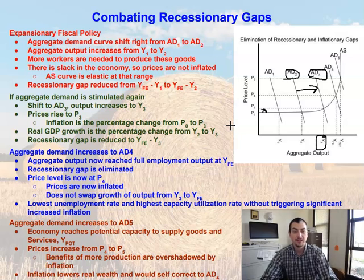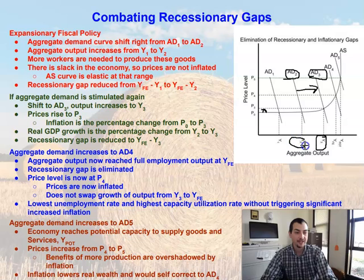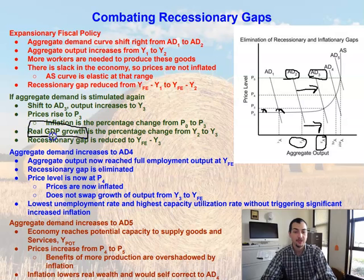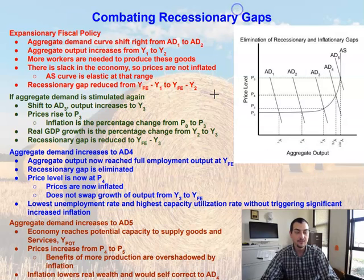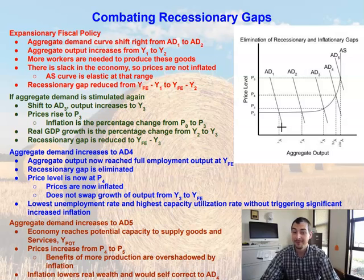So what's going on here? We do have a little bit of inflation, but real GDP growth is the percentage change from Y2 to Y3. So we have growth in our GDP and a small minor amount of inflation. The percentage change from Y2 to Y3 is our real GDP growth. And again, we're actually reducing our recessionary gap by moving from AD2 to AD3. We do have more being produced, prices go up, but not by that much, and real GDP has gone up.